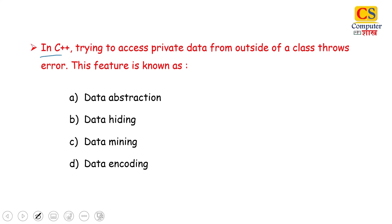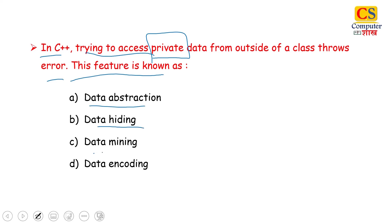In C++, trying to access private data from outside of a class throws an error. This feature is known as: Data Abstraction, Data Hiding, Data Mining, or Data Encoding. Now options C and D we can easily eliminate. The confusion is between abstraction and hiding.